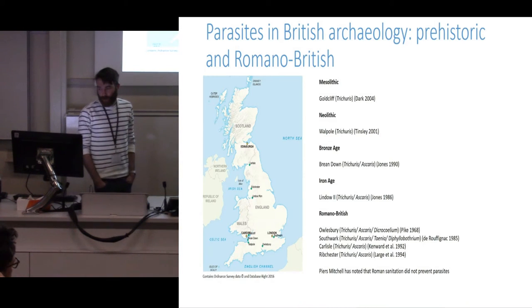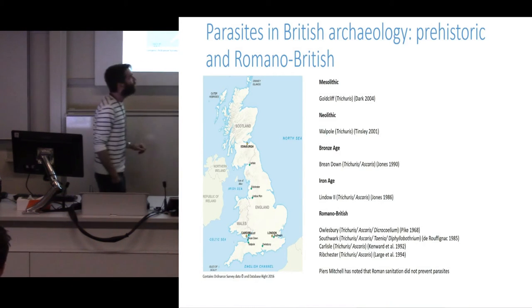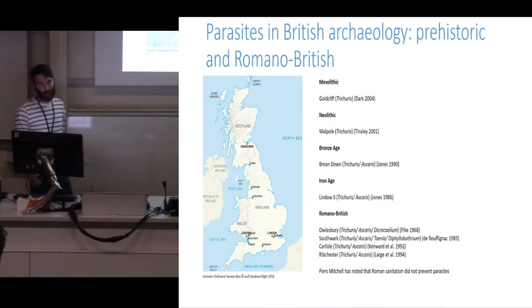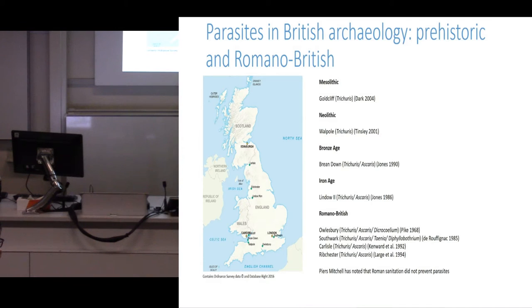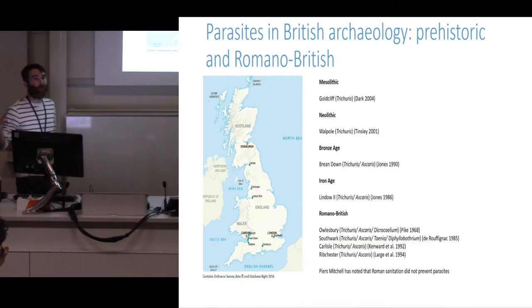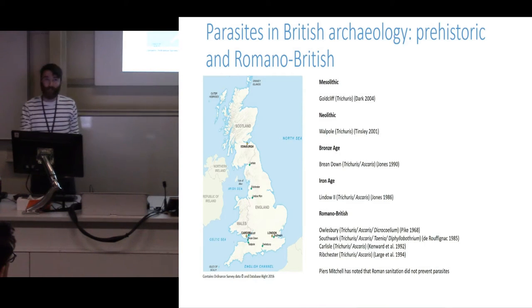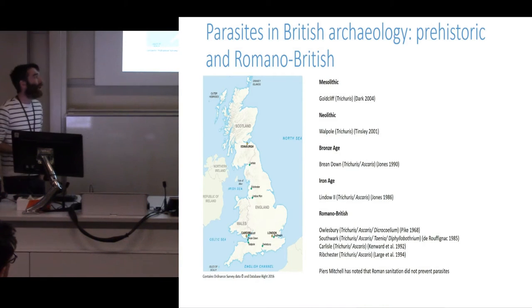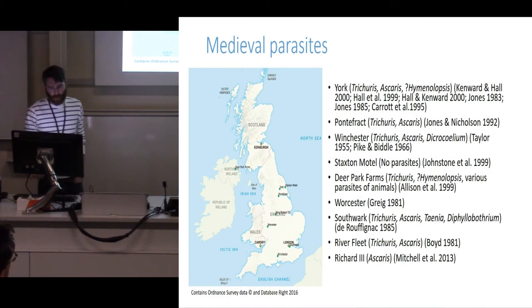There's a bit more work for the Romano-British period. We start to get food-related parasites — tapeworms, the pork or beef tapeworm Taenia, and fish tapeworm Diphyllobothrium latum — in Southwark in the Roman period. Ribchester, a Roman fort, is interesting: although Trichuris and Ascaris are present, they're not in very high quantities — only one sample out of many had any great quantity — which might suggest something about sanitation at the fort. However, Piers Mitchell at Cambridge has looked at this throughout the Roman Empire and found that Roman sanitation levels don't seem to have done very much to prevent parasites.